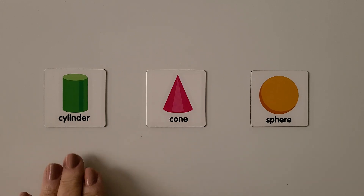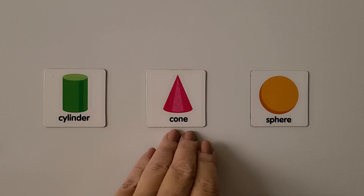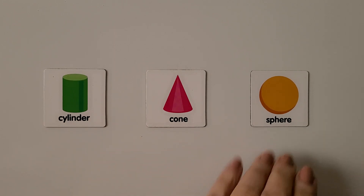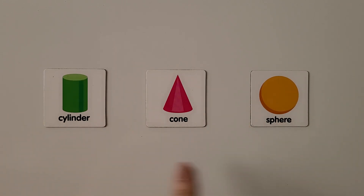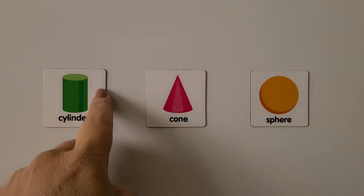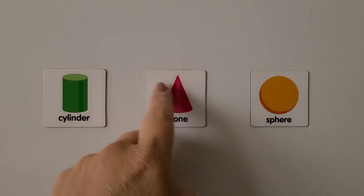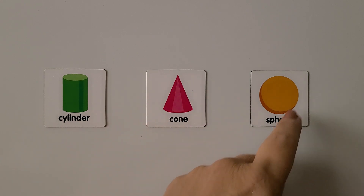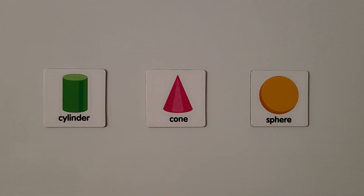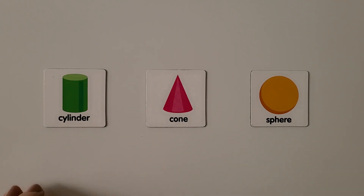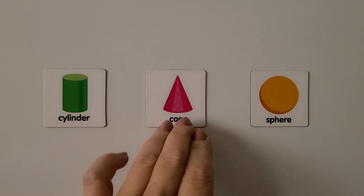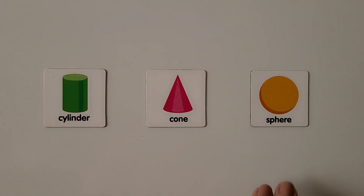A cylinder, a cone, and a sphere are all alike because they all have a curved surface. The cylinder has a curved surface here, a cone has a curved surface here, and a sphere is curved all around. The cylinder and cone are different from a sphere because they have a flat surface, and a sphere does not have any flat surfaces.